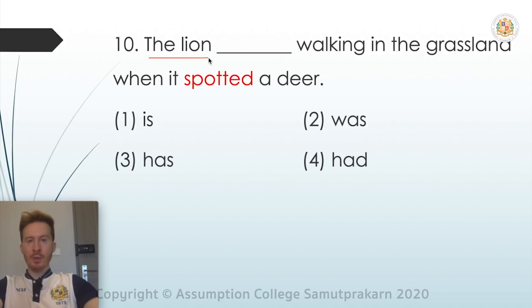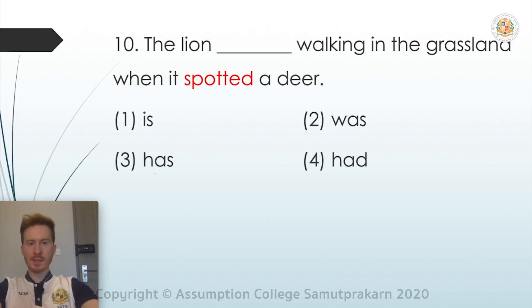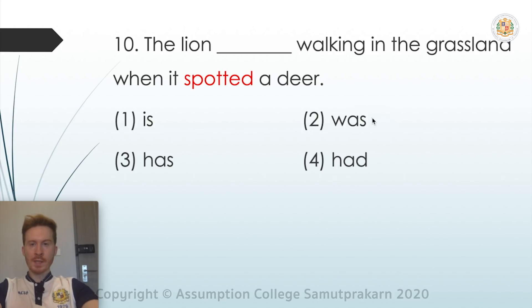Question ten: 'The lion ___, walking in the grassland, when it spotted a deer.' The clue is 'spotted' — it has ED at the end, meaning it's in the past simple tense. This tells us the answer should be in the past continuous tense. The correct answer is 'was' — the lion WAS walking in the grassland when it spotted a deer. It was walking.